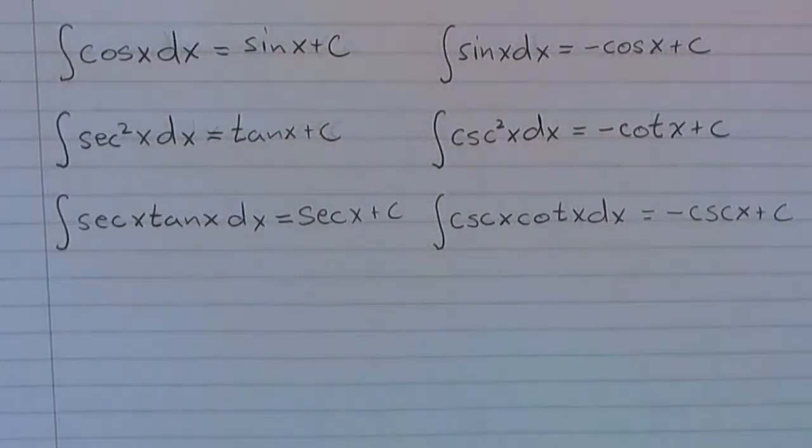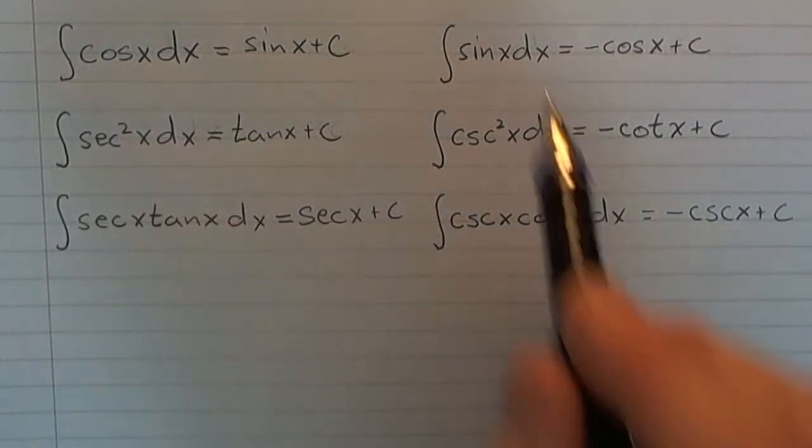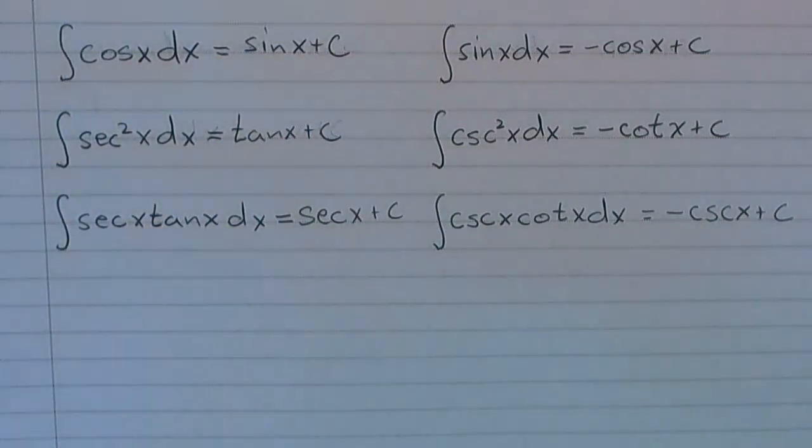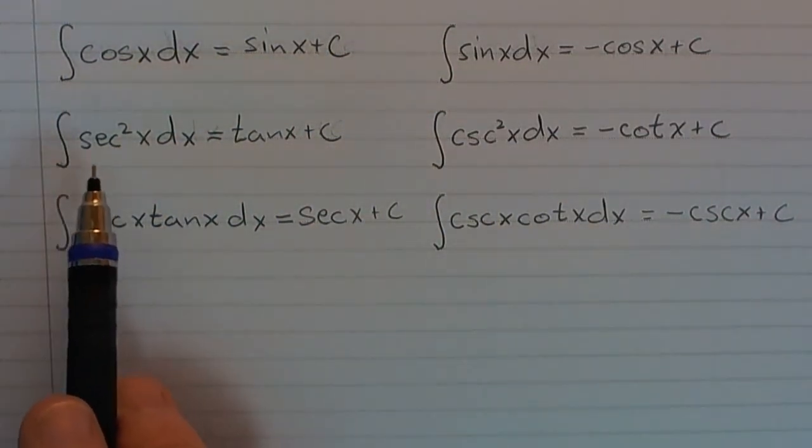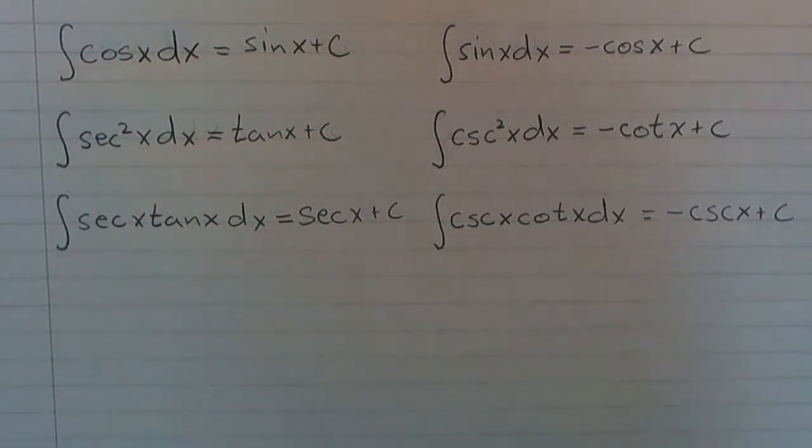So these are the relationships here. Now, these are the ones that we can take note of at this time. And notice I didn't say what is the antiderivative of secant. Well, that's going to come later. Right now, these are the ones that we can work with.